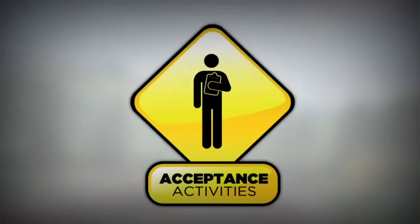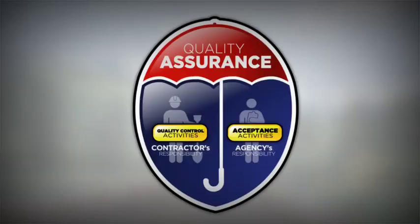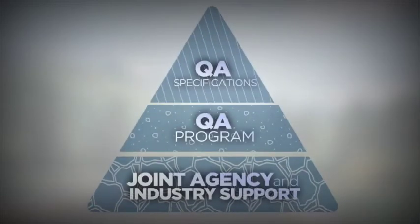The agency's Acceptance function means taking responsibility for verifying and accepting the quality of materials and construction workmanship. Complete QA implementation requires three major components, which can be illustrated as tiers within a pyramid diagram to show how these components build upon each other.